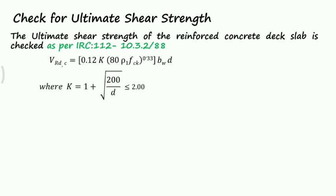The K value: K equals 1 plus square root of 200 divided by D. As D value is 220, K equals 1 plus 200 divided by 220, the value is 1.953.